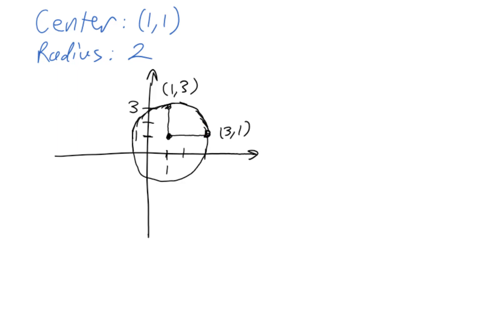It turns out there's a particular pattern we can follow to find the equation of this circle. All we do is take the coordinates of the center — (1, 1) — and write x minus the x-coordinate of the center, quantity squared, plus y minus the y-coordinate of the center, quantity squared, and set that equal to the radius squared. The radius is 2, so that's 2 squared.